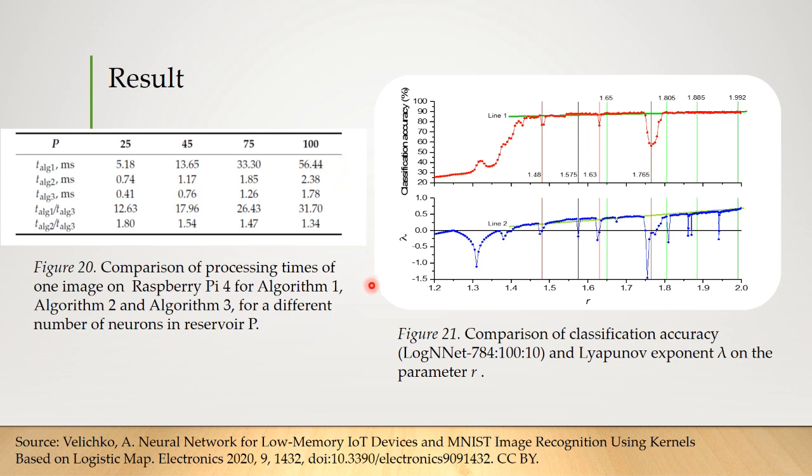The following picture presents the comparison of the dependence of the Lyapunov exponent for the logistic mapping and the classification accuracy of the LogNNet network on the parameter R. The Lyapunov exponent represents an effective way of assessing the chaoticness. Positive Lyapunov exponent corresponds to chaotic behavior while λ less than 0 corresponds to order. The picture demonstrates that an increase in the chaoticness of the logistic mapping leads to an increase in the classification accuracy. And the highest values of classification accuracy were observed at R more than 1.4.